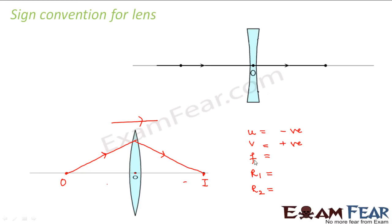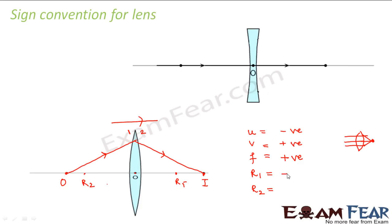For the focal length, we talk about the second focal point — the point where the ray of light converges after refraction. In case of a convex lens, the rays meet on the right side, so the focal length F is positive. For R1 (surface 1) and R2 (surface 2): R1's radius lies on the right side, so R1 is positive. R2's radius lies on the left side, so R2 is negative.